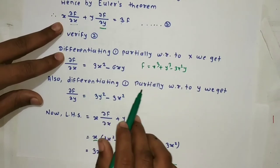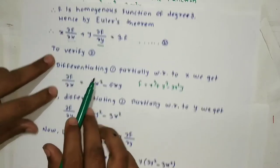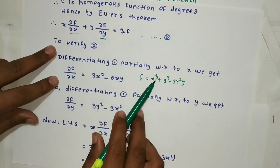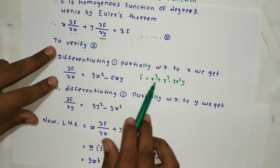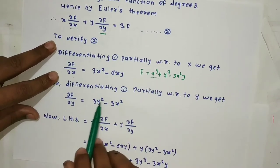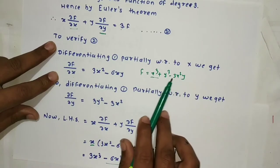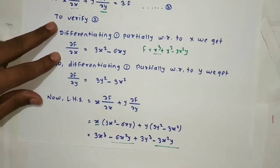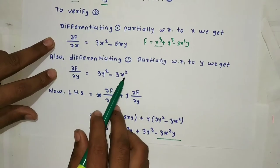Also, differentiating partially with respect to y: we already have ∂f/∂x calculated. Now find ∂f/∂y. The x³ term has no y present, so its derivative is 0. The derivative of y³ with respect to y is 3y². For -3x²y, the derivative with respect to y is -3x². So ∂f/∂y = 3y² - 3x².